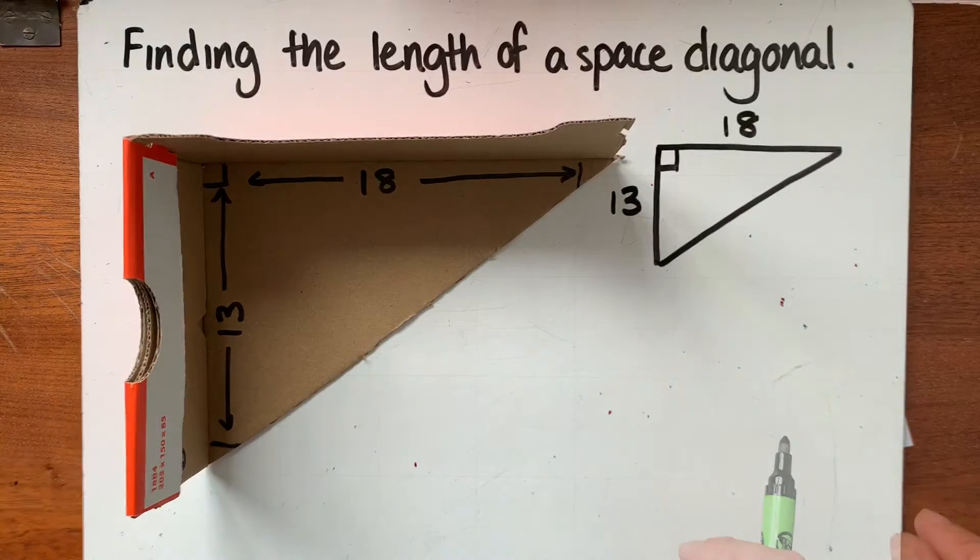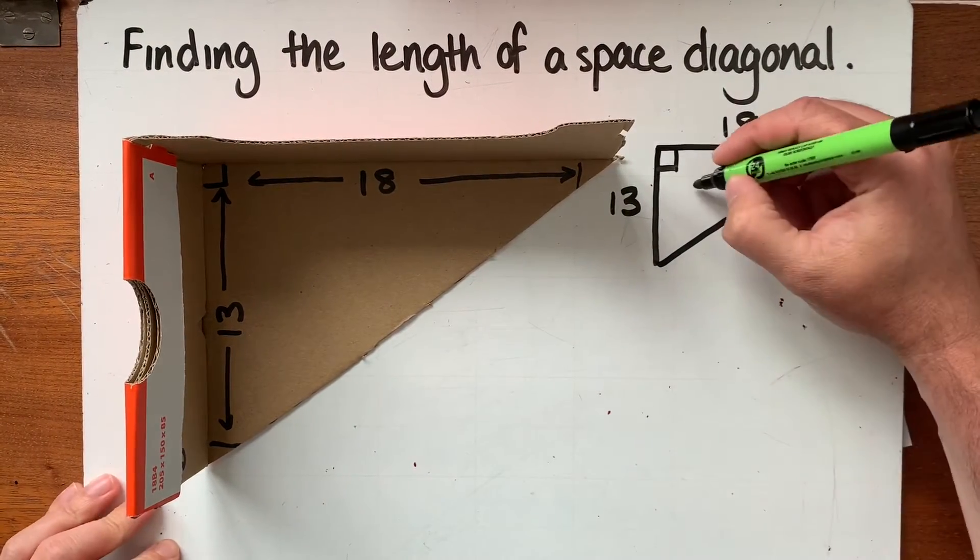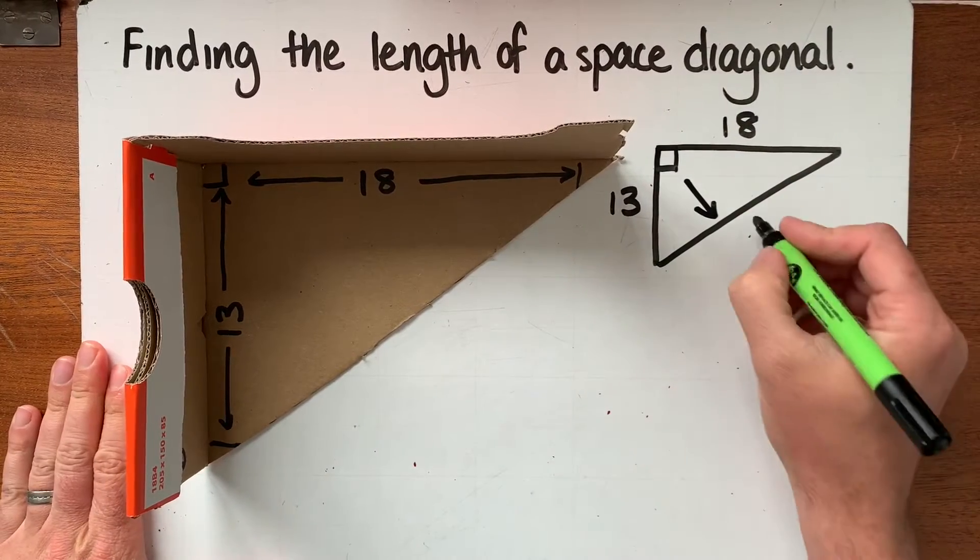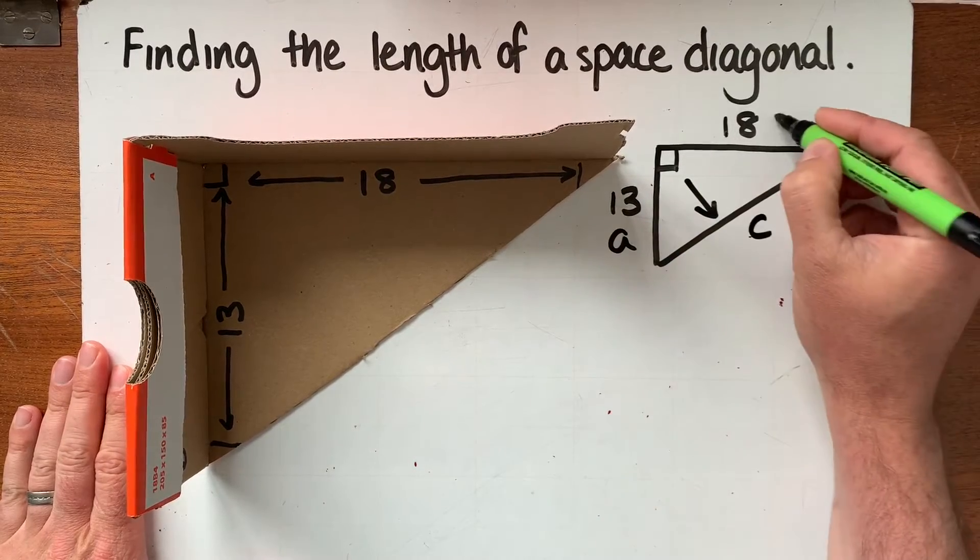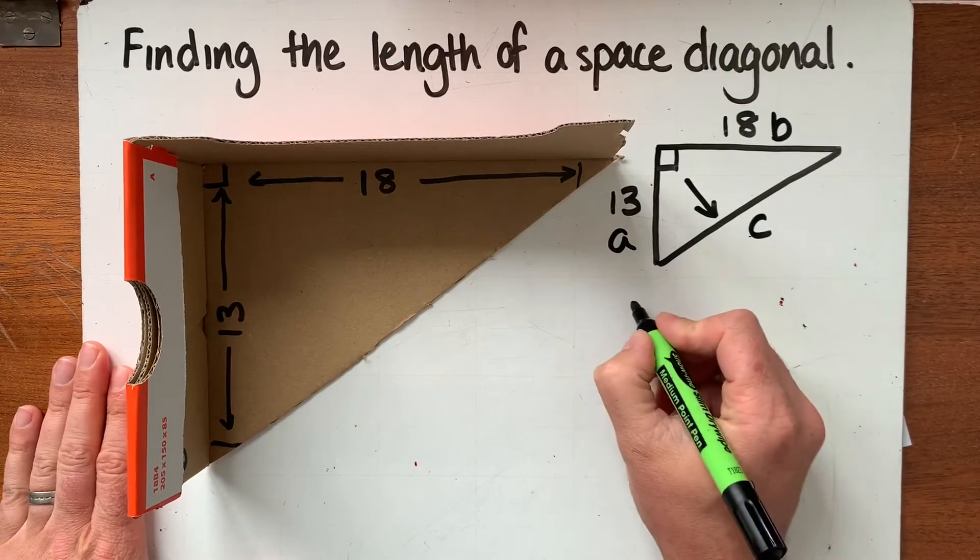So let's find the length of this face diagonal and we can see that we're finding the side that is opposite the right angle so this is the hypotenuse. We call it C and that lets our other sides be called maybe A and B. We're finding the longest one.